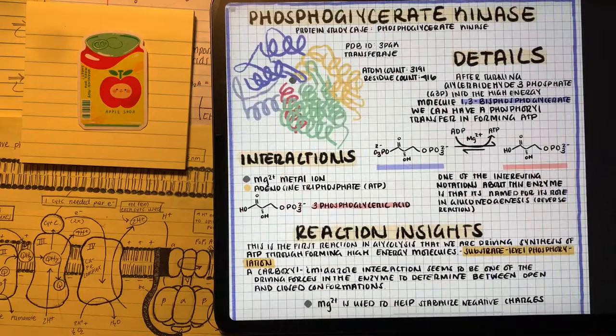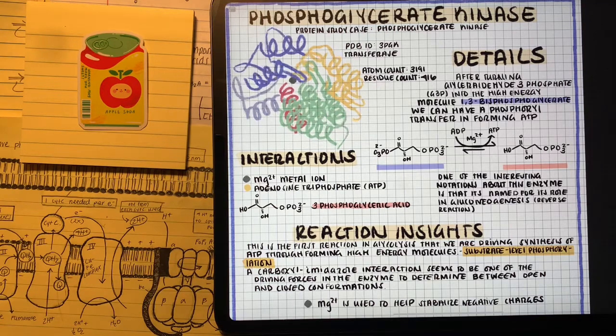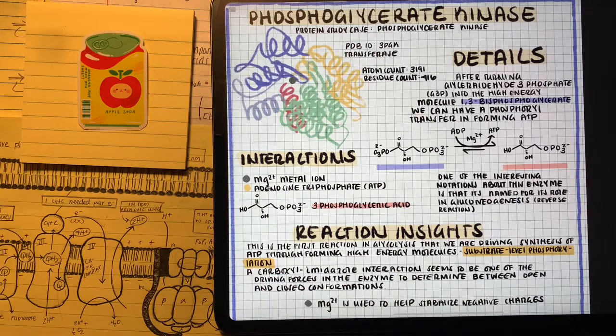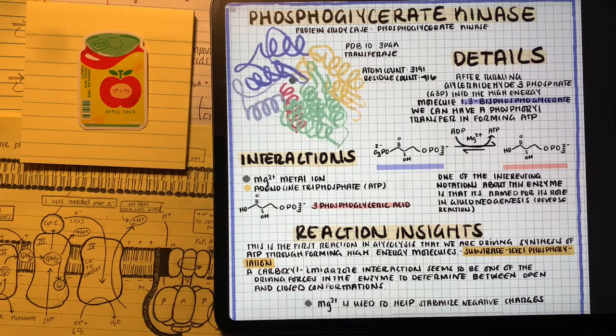The next step, we're looking at phosphoglycerate kinase. This enzyme complex is really important because it's our first example of substrate-level phosphorylation. The reason it's called substrate-level phosphorylation is because the 1,3-bisphosphoglycerate that we just formed is going to transfer a phosphoryl group from 2 ADP to form ATP.